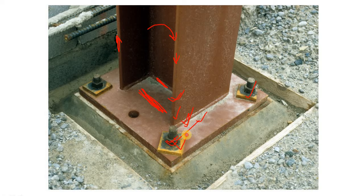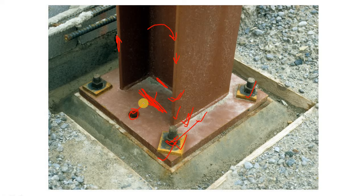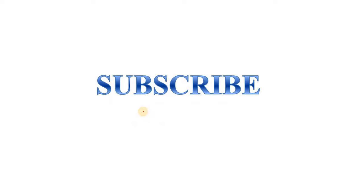Suppose the bolts were in the region between the flanges. In that case, the push and pull of the column could not be transferred to the soil through the bolts, and that base connection would be called a shear-connected base. That's all. If you enjoyed this video, please don't forget to subscribe.